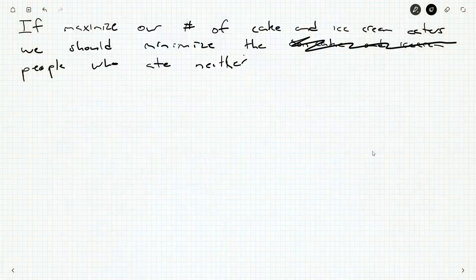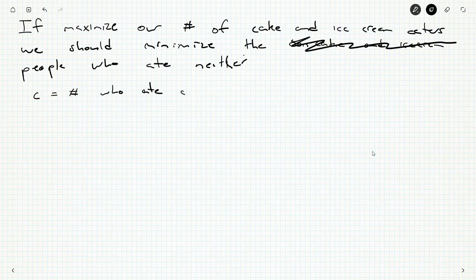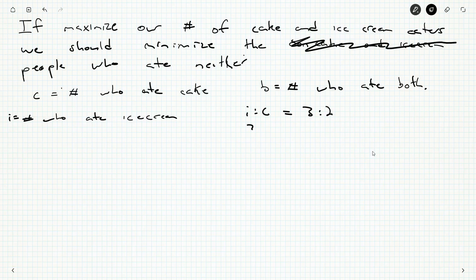So I want to make the number of people who had cake and ice cream as big as possible. I need to set up an equation, at least one equation, I think. So I'm going to let C equal the number who ate cake and B the number who ate both. Now the number who ate ice cream, I could introduce another variable for that. We could call it I, but we know that I to C is the same as three to two.